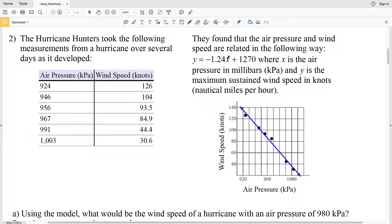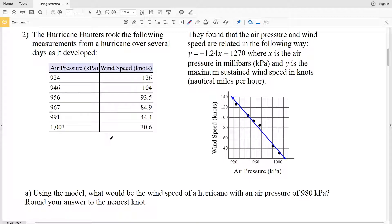X is the air pressure in millibars, so X represents our air pressure, and Y is the maximum sustained wind speed in knots. Our first question says using the model, what would be the wind speed of a hurricane with an air pressure of 980 millibars? We're going to round our answer to the nearest knot.